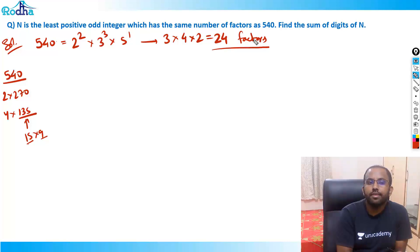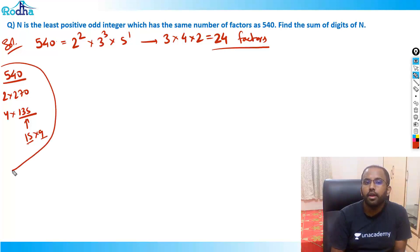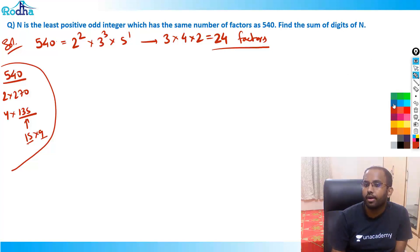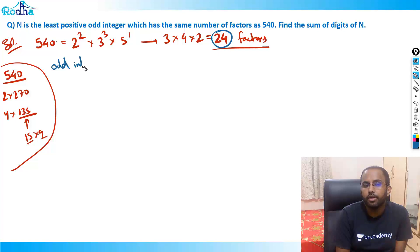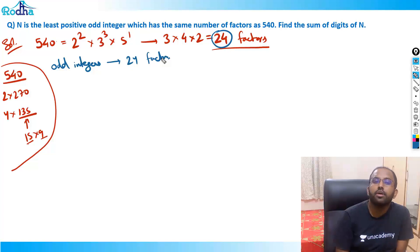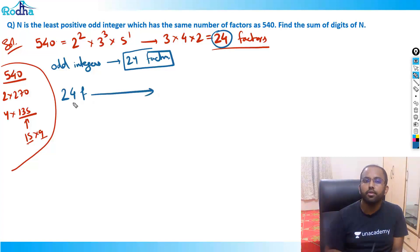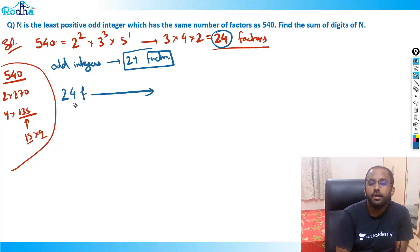The question says N is the least positive odd integer which has the same number of factors as 540 — that means 24 factors. So there is some odd integer which has 24 factors, and I want to find the least positive odd integer. To minimize the value, when we have 24 factors, we split into the maximum number of prime factors — that gives a minimum value in 99.5% of cases.